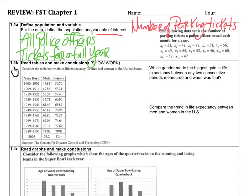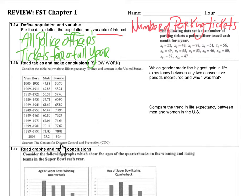For 1.1b, we're going to read tables and make conclusions. Consider the table below about life expectancy for men and women in the U.S. What we have here is roughly a two-year time slot showing life expectancy for men and women across different time periods. The source comes from the Center for Disease Control and Prevention, which is a valid source.